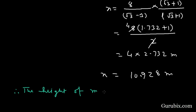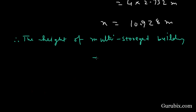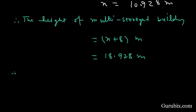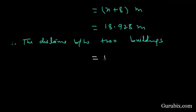Therefore the height of the multi-story building is x plus 8 meters, which equals 10.928 plus 8, giving 18.928 meters. The distance between the two buildings is y, which equals root 3 times x, also equal to 18.928 meters. This is the solution of the question. Thank you.